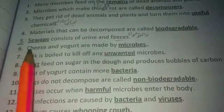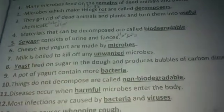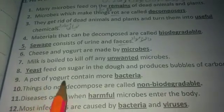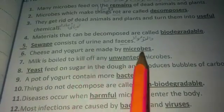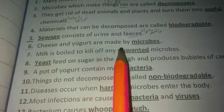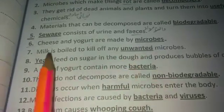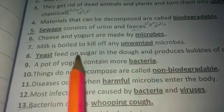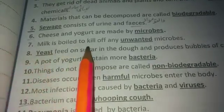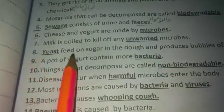Number five: sewage consists of urine and faeces. Number six: sewage, which is urine and faeces, is processed by microbes. Number seven: milk is boiled to kill off any unwanted microbes.